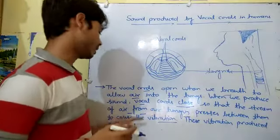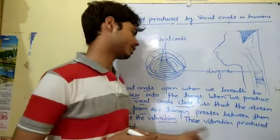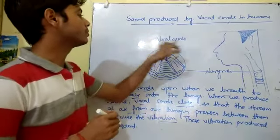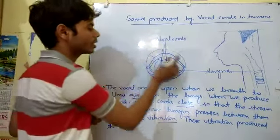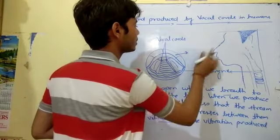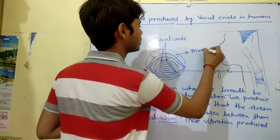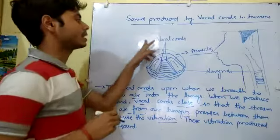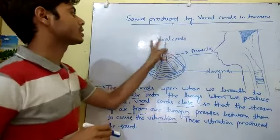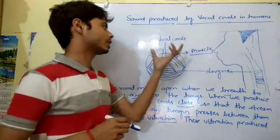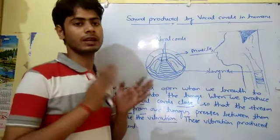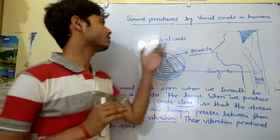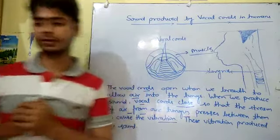The vocal cords are surrounded by muscles. These muscles provide the tightness or looseness of the vocal cords. The sound may differ depending on the tightness and looseness of the vocal cords.